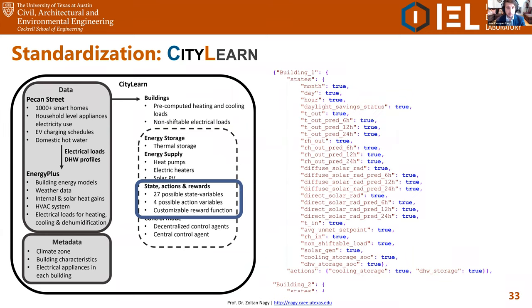In another JSON file it is easy to modify the states you want the environment to return to your RL controller — these are all variables that can potentially predict energy consumption. The two current actions are increasing or decreasing cooling energy storage or domestic hot water storage. In the future we will implement two additional actions to control batteries and the charge and discharge of electric vehicles.